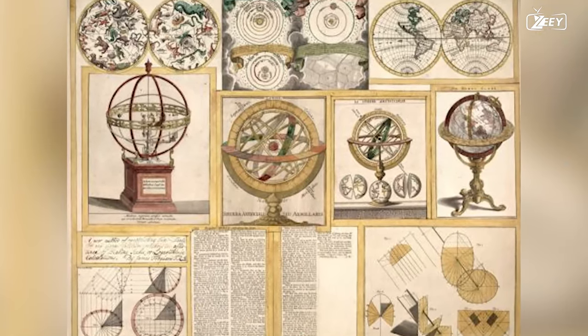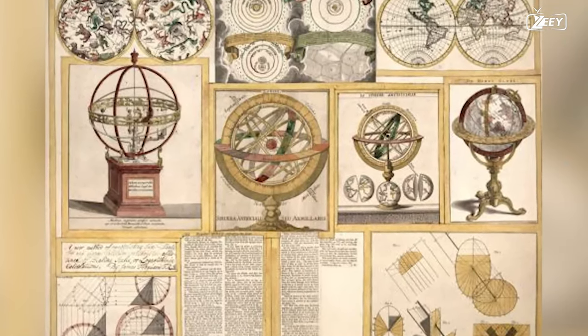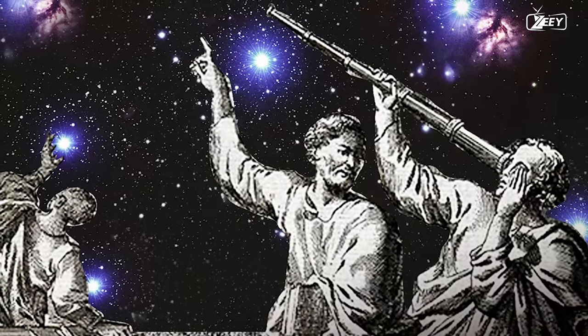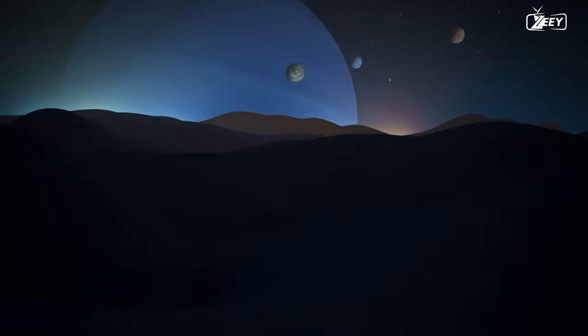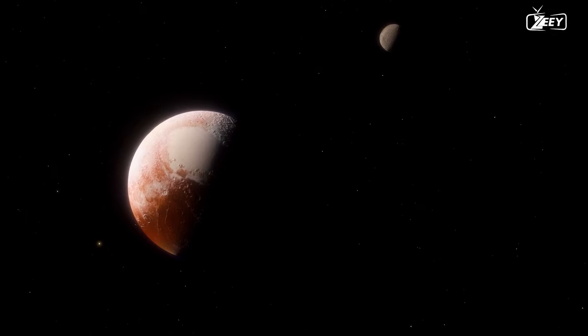As the sophistication of technology and our comprehension of the universe increased, more and more planets in our solar system were discovered. Moons orbiting Jupiter and Saturn, icy giant planets, and icy dwarf planets.